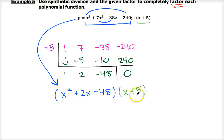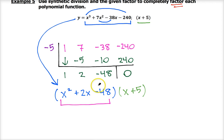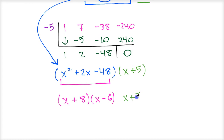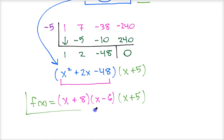So I just divided this polynomial by x plus 5 and got x squared plus 2x minus 48. That means the original polynomial factors into x squared plus 2x minus 48 times the quantity x plus 5. And I know how to factor x squared plus 2x minus 48 — it factors into x plus 8 times x minus 6. So knowing that factor of x plus 5 has allowed me to fully factor the polynomial: x plus 8 times x minus 6 times x plus 5.